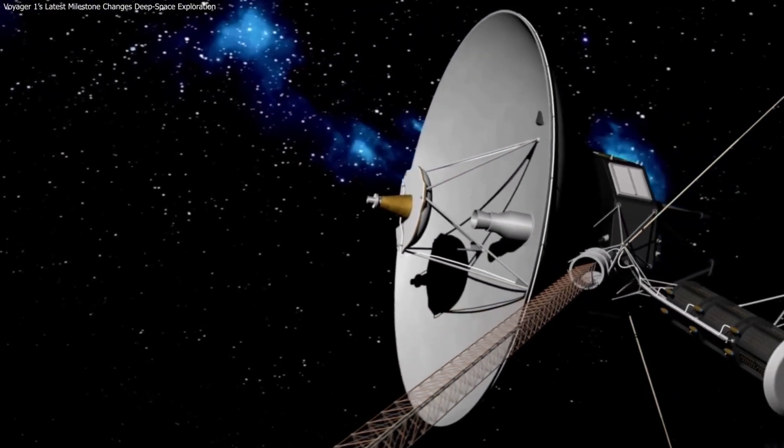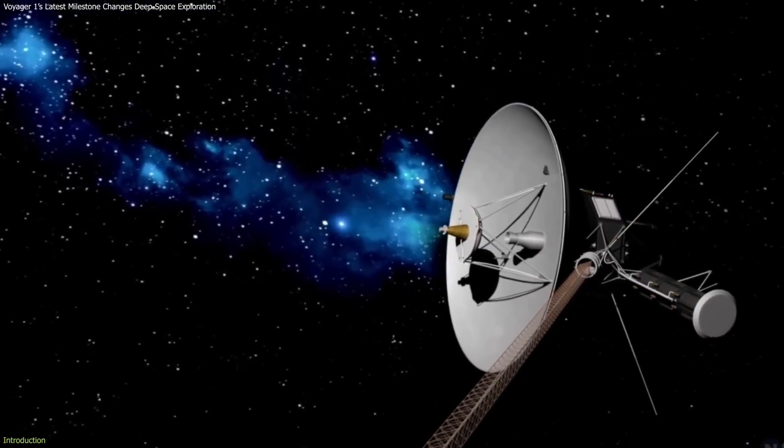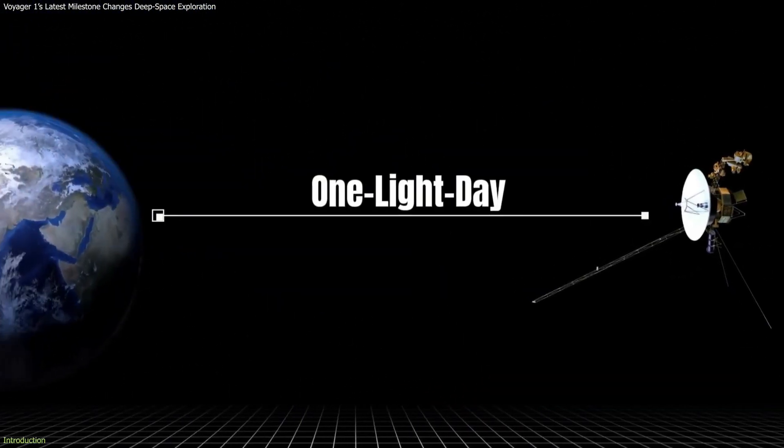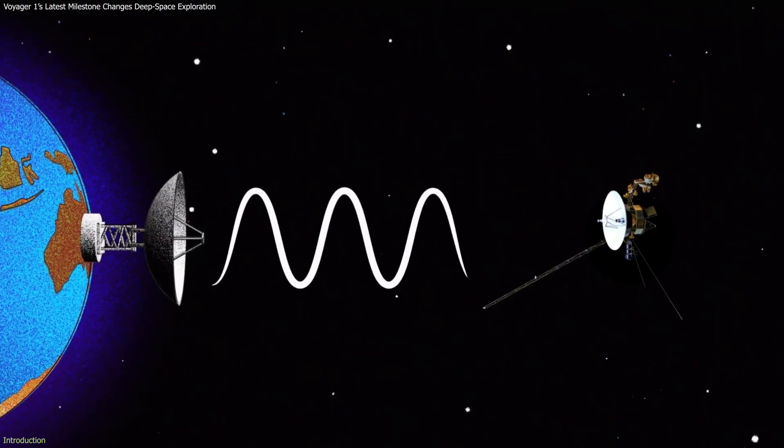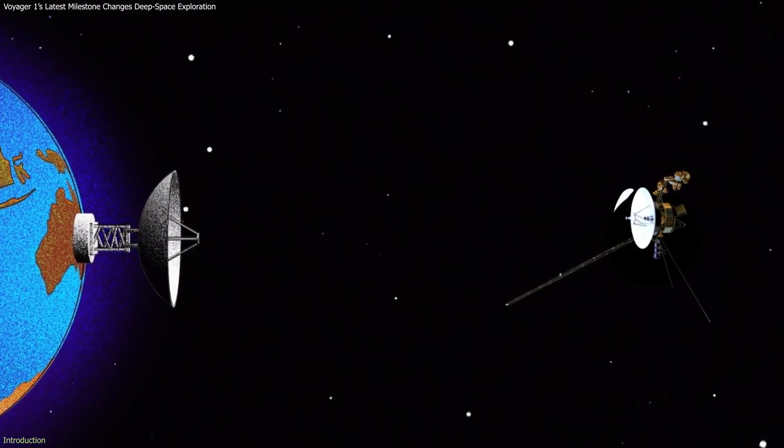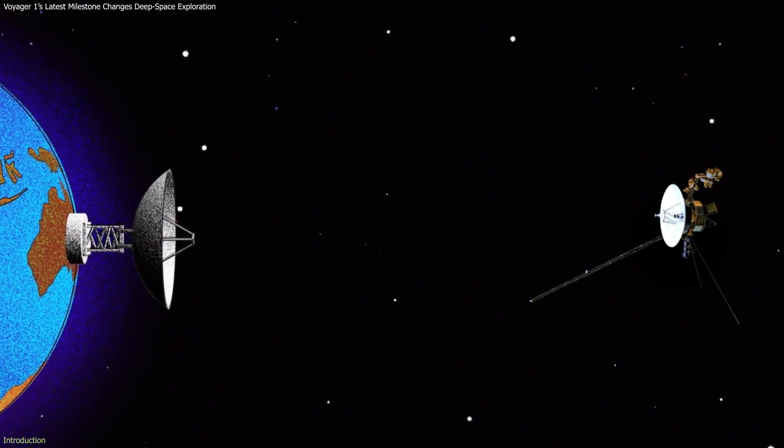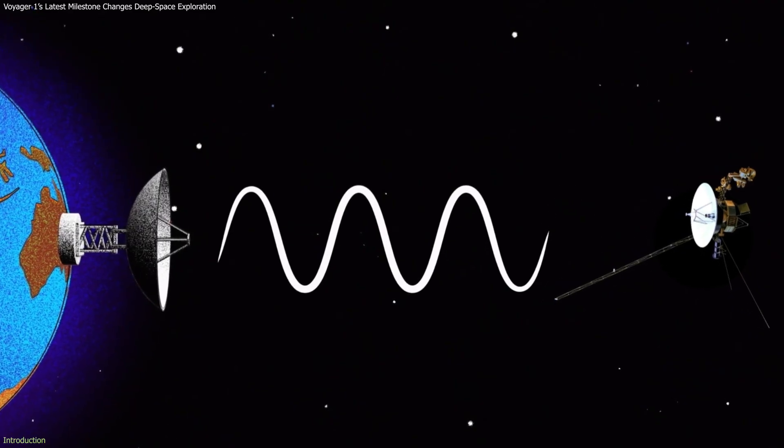Voyager 1 is approaching a milestone no spacecraft has ever reached – one full light day from Earth. At that distance, every command takes 24 hours to arrive, and every reply takes another 24 hours to return.